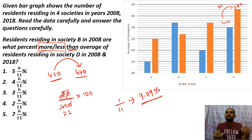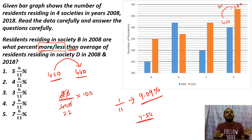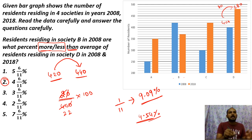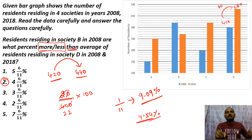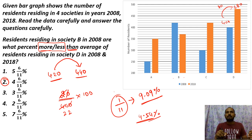We know the fraction values. 1 by 22 gives 4.54 or 4.55%. The answer is option B. This is the second question. If you know fraction values and the percentage topic, you can get the answer quickly. Cancel and divide to simplify.